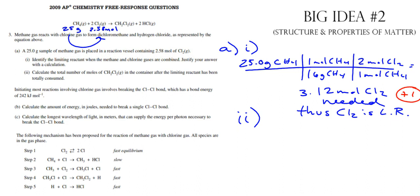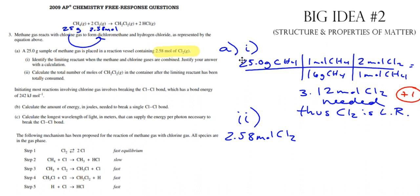Calculate the total number of moles of CH2Cl2 in the container after the limiting reactant has totally been consumed. You have to use Cl2 - I have to use that. It's always good to just go back to stoichiometry and make sure we can do this. It's not a good feeling when you work on advanced stuff all the time and then they ask you something and you're like, I know I was good at this, but I don't remember now.